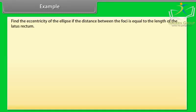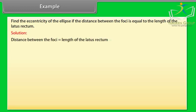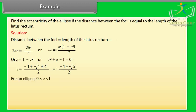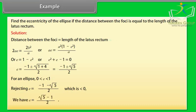Example: Find the eccentricity of the ellipse if the distance between the foci equals the length of the latus rectum. Solution: 2ae = 2b²/a, so ae = a²(1 − e²)/a, giving e = 1 − e². Therefore e² + e − 1 = 0, so e = (−1 ± √5) / 2. For an ellipse, 0 < e < 1. Rejecting e = (−1 − √5)/2 (which is less than 0), we have e = (√5 − 1) / 2.